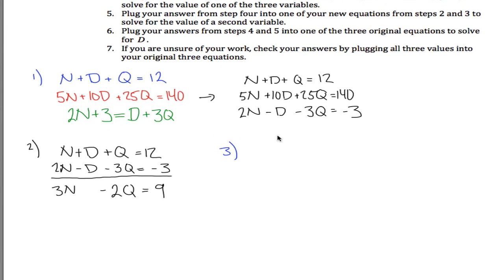Got some freedom on which ones you use, I think I'm going to use the second and the third one here. Why? Just a second, 5N plus 10D plus 25Q equals 140. And then the other equation is 2N minus D minus 3Q equals negative 3. I chose those because I got positive D in this one and negative D here. So if I can just multiply this by 10, I'll get positive 10D here and negative 10D here. And that will allow me to add these equations together and cancel out the D's.